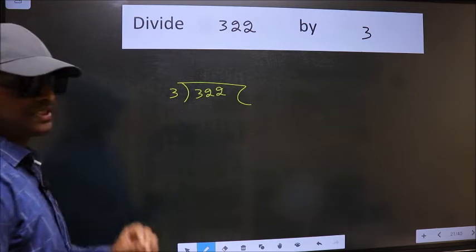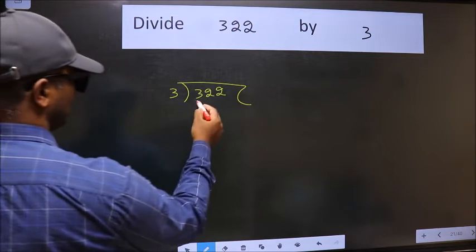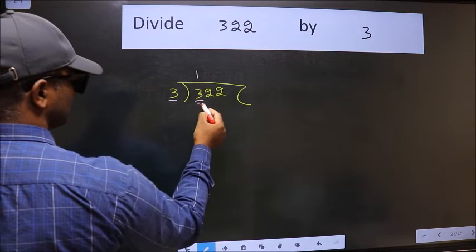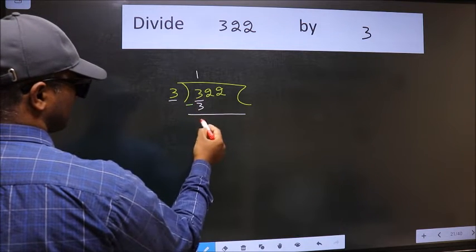This is your step 1. Next, here we have 3, here also 3. When do we get 3 in the 3 table? 3 once is 3. Now we should subtract. We get 0.